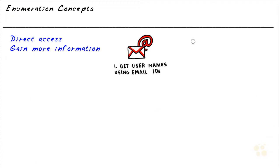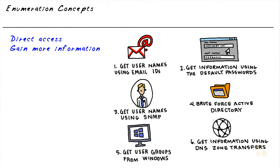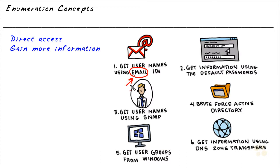There are lots of options for getting information. For example, how tough is it to get someone's email address? If they hand you a business card, you've got their email address. If they're also using that email address as part of their login, that gives the attacker an advantage of knowing potential IDs they can use as they try brute force attacks or try to log into the network.